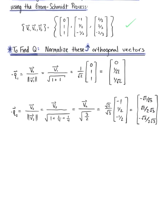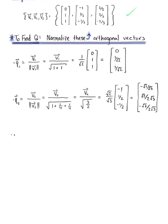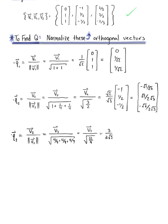Last but not least, we find vector Q sub 3 by normalizing vector V sub 3. We have V sub 3 divided by its length, which is the square root of 4 ninths plus 4 ninths plus 4 ninths, simplifying to the square root of 12 ninths. This further simplifies to 3 over 2√3, multiplied by V sub 3 with components 2/3, 2/3, negative 2/3. Distributing gives us the vector with components 1 over √3, 1 over √3, and negative 1 over √3.